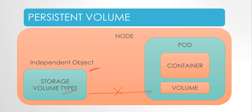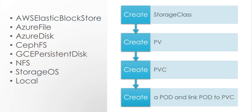To understand this concept completely, we need to know how we create this complete independent object in detail. We will create three additional objects: one is storage class, the second one is PV, and the third one is PVC. So the first step is to create a storage class, followed by PV (persistent volume), then persistent volume claim, and a pod where we will link this persistent volume claim.